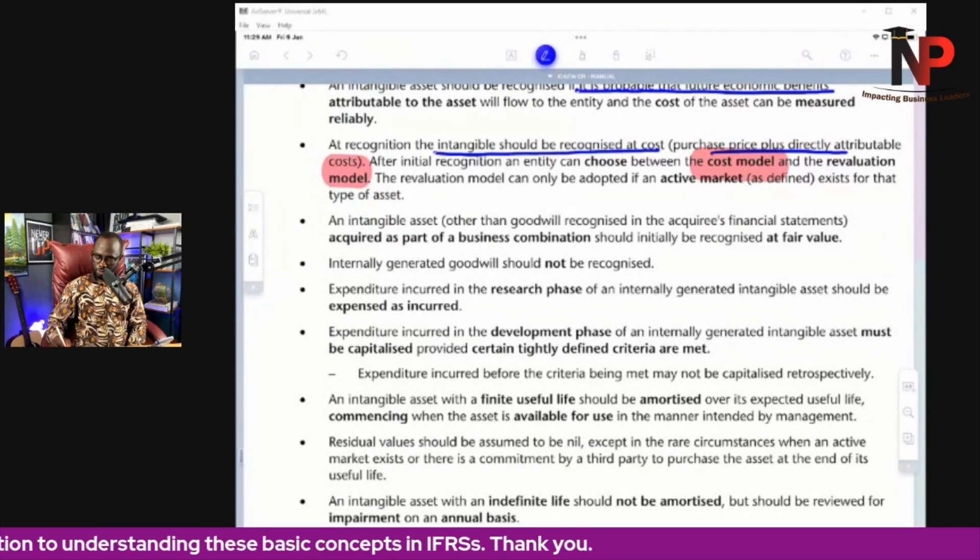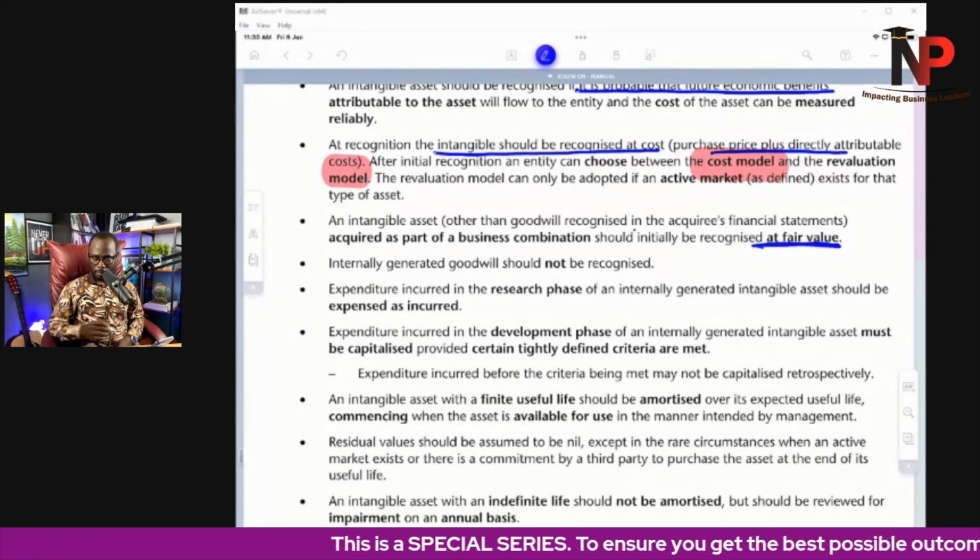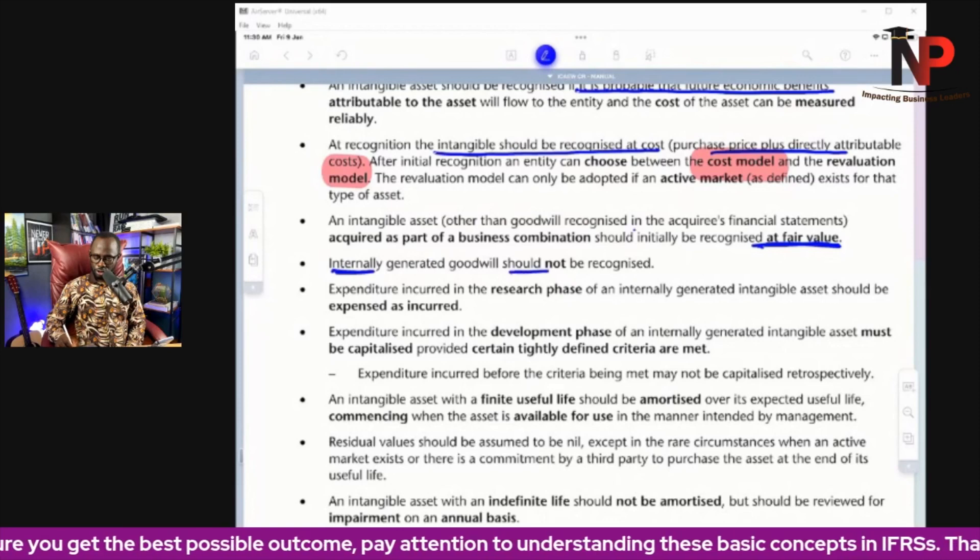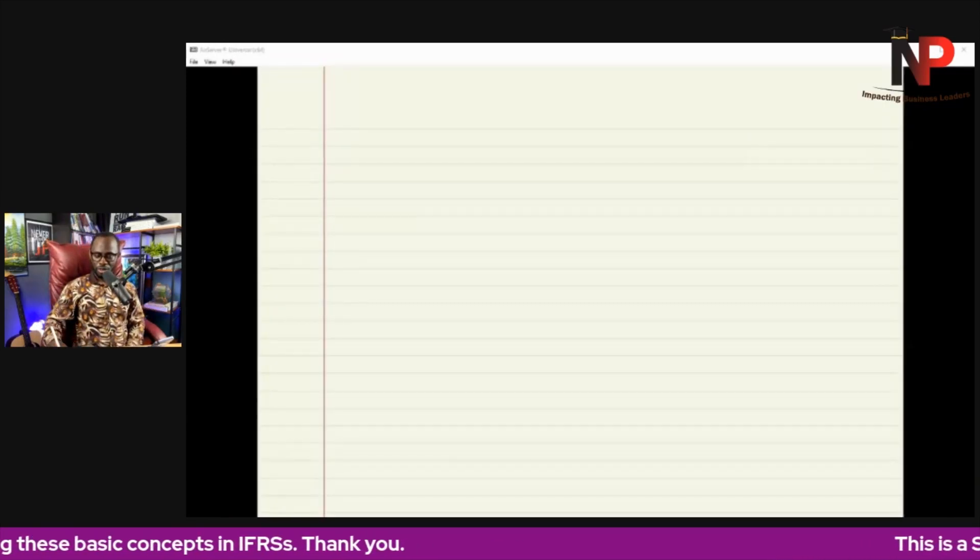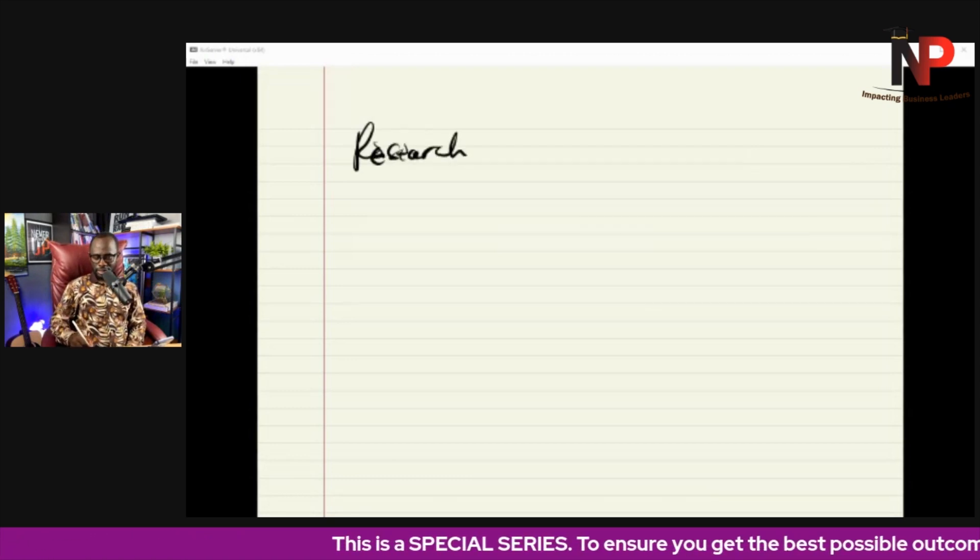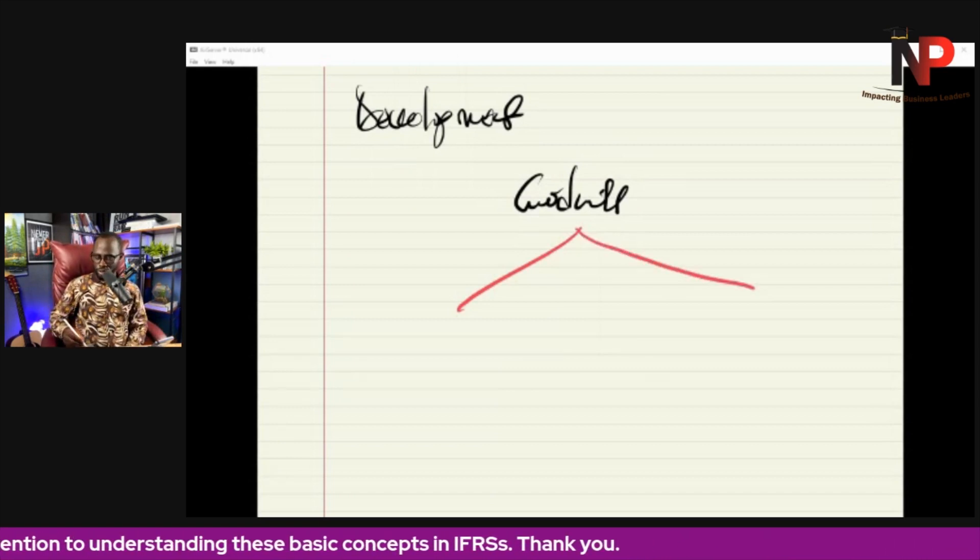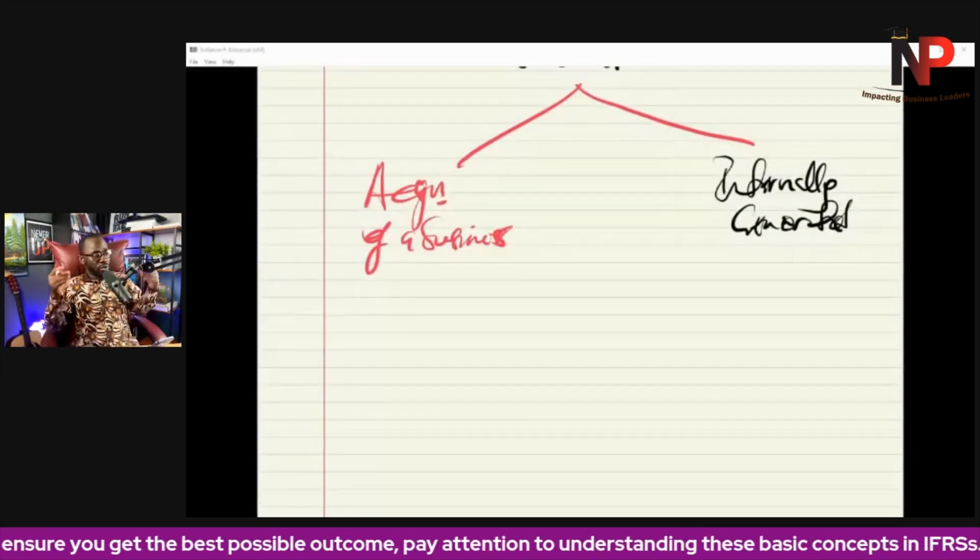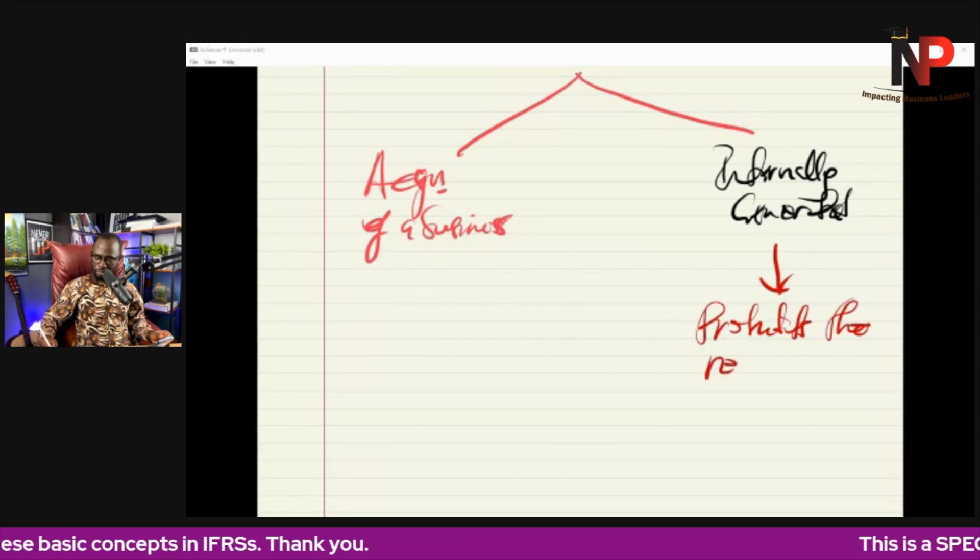Next one. An intangible asset other than goodwill recognized in the acquiree's financial statements acquired as part of a business should initially be recognized at fair value. I'm going to explain this to you in a moment. Internally generated goodwill should not be recognized. Now IAS 38 paid attention to three issues we need to look at: research, development, and goodwill. Goodwill has two things. It can arise as a result of acquisition of another business or it can be internally generated by the entity. The standard prohibits the recognition of internally generated goodwill. Let me explain to you.